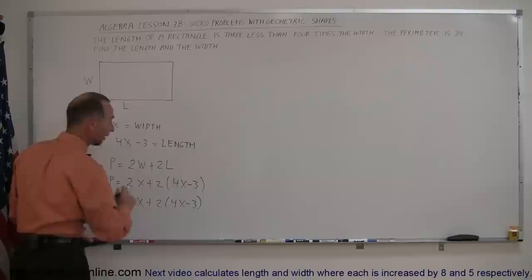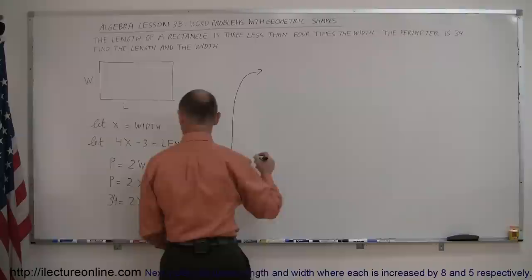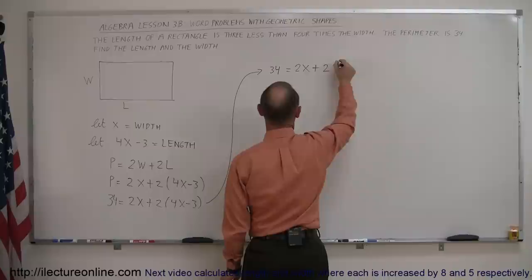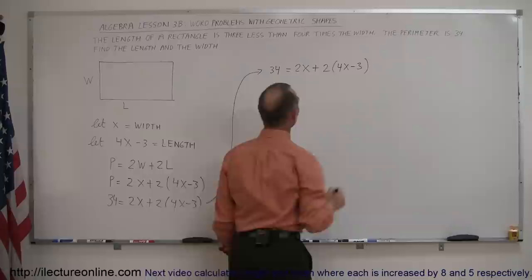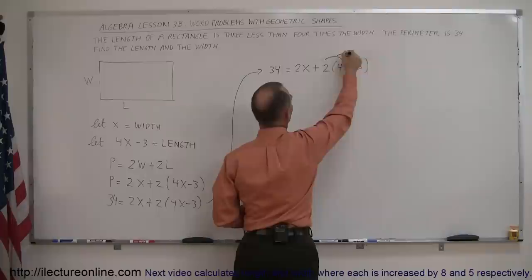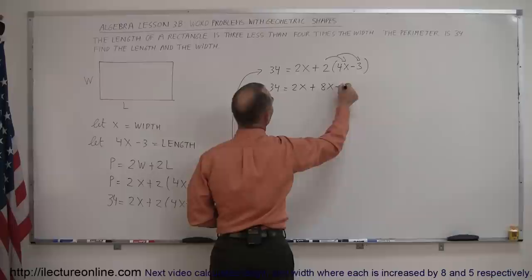Giving myself some more room, rewriting it over here. I can say that this is 34 is equal to 2x plus 2 times 4x minus 3. So what do we do first? Well, we want to get rid of the parentheses first. So let's multiply the 2 with both the 4x and the negative 3. So we have 34 equals 2x plus 8x minus 6.